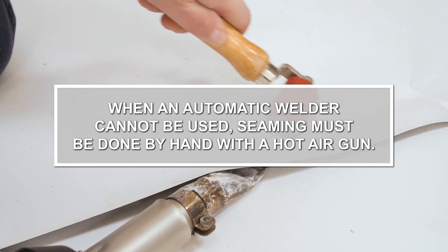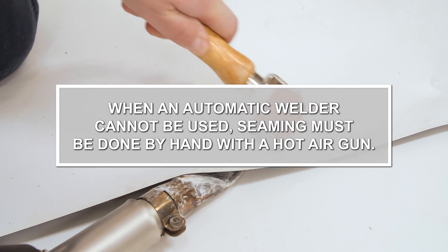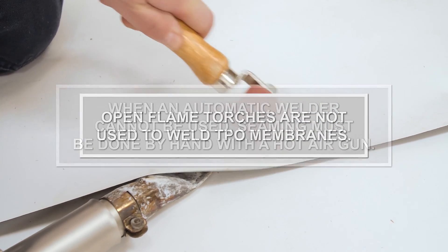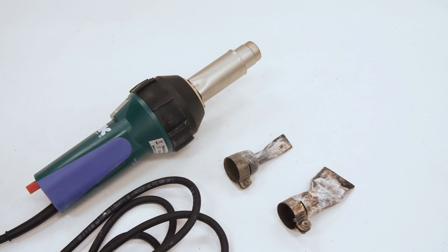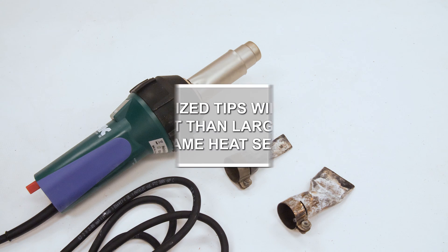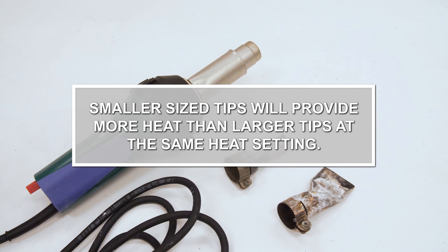When an automatic welder cannot be used, seaming must be done by hand with a hot air gun. Open flame torches are not used to weld TPO membranes. Most heat guns are 110 volts and are provided with removable tips. Mulehide recommends either a 20mm or a 40mm tip when welding TPO membranes.